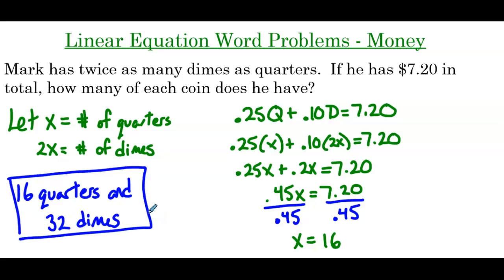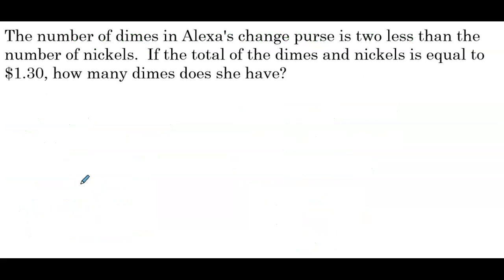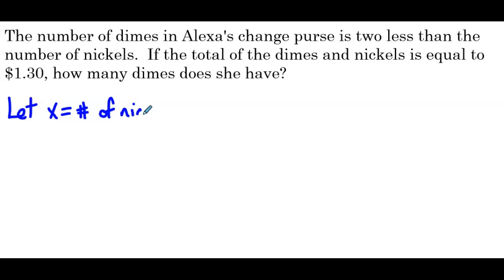So there's our first word problem that involves money. Our next example: the number of dimes in Alexa's change purse is 2 less than the number of nickels. If the total of the dimes and nickels is equal to $1.30, how many dimes does she have? Starting with our let statement: the number of dimes is 2 less than the number of nickels, so dimes is defined in terms of nickels. So x would be the number of nickels, and x minus 2 is the number of dimes.